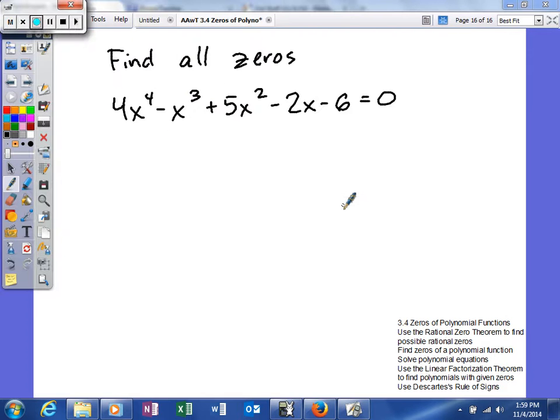Alright, this time we're basically going to put everything together and see if we can't do this. First of all, we'll look at the possible rational zeros.